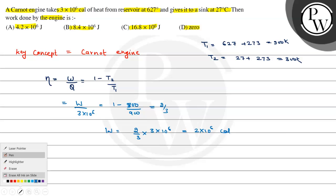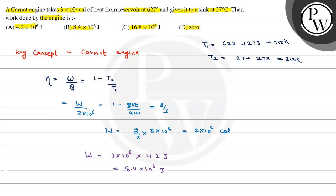This is in calories. To find work done in joules, we know that work done is 2 × 10^6 calories. One calorie equals 4.2 joules, so it becomes 8.4 × 10^6 joules. This is our work done and final answer.